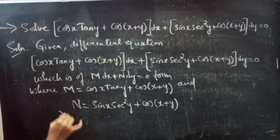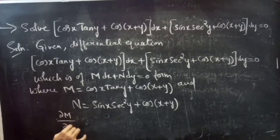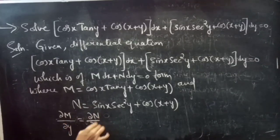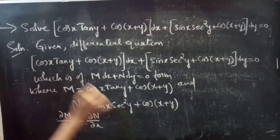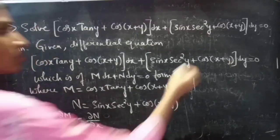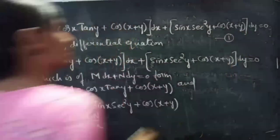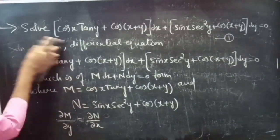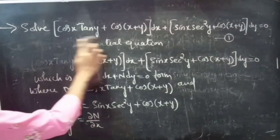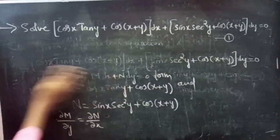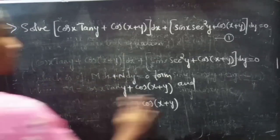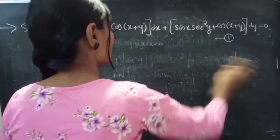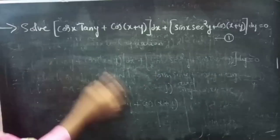If the partial derivative of M with respect to y is equal to the partial derivative of N with respect to x, then we can say that the given equation (say equation 1) is an exact equation. So now we will find ∂M/∂y and ∂N/∂x.